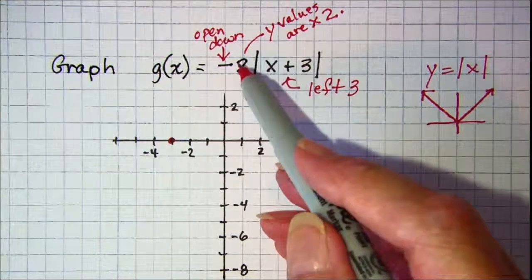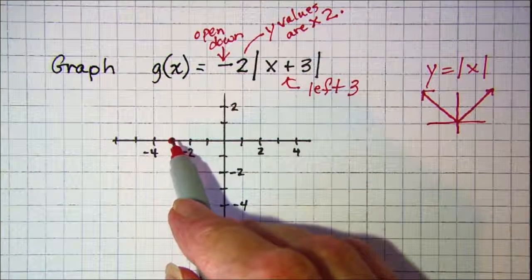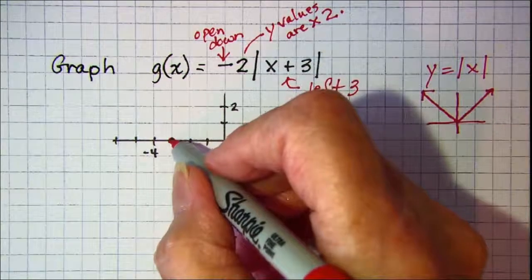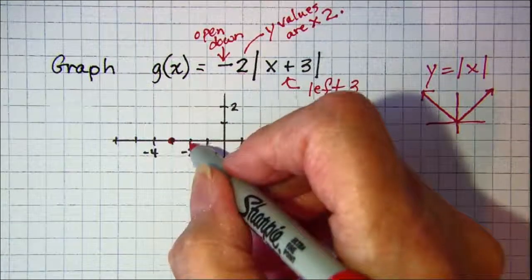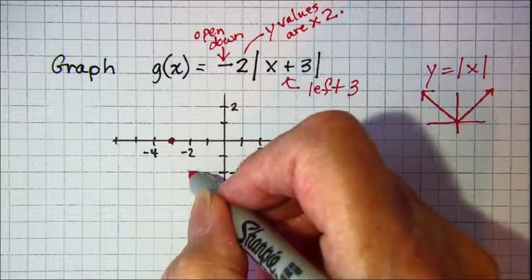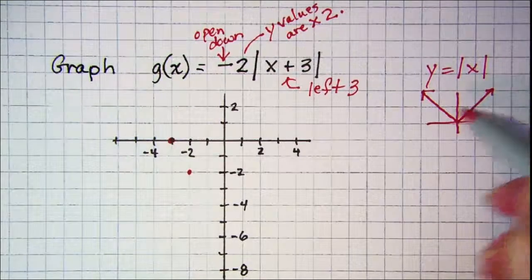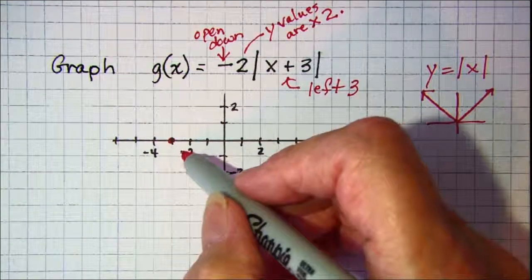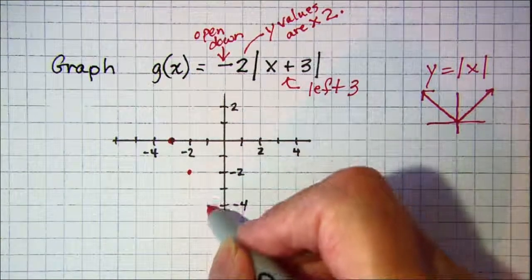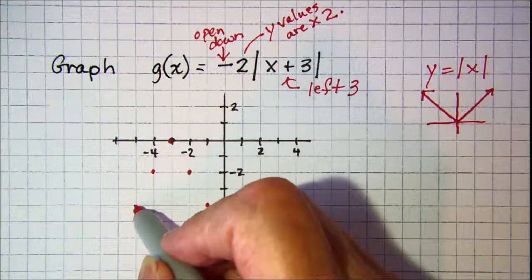Our absolute value graph, instead of opening up, will open down, and the y values will be 2 times as big. So usually when we go right 1 we go up 1, but we're going to go down and it'll be 2 times as much. So instead of a slope of 1, we'll have a slope of 2 and negative 2. So we have right 1 down 2, and on the left side left 1 down 2, continuing the pattern.